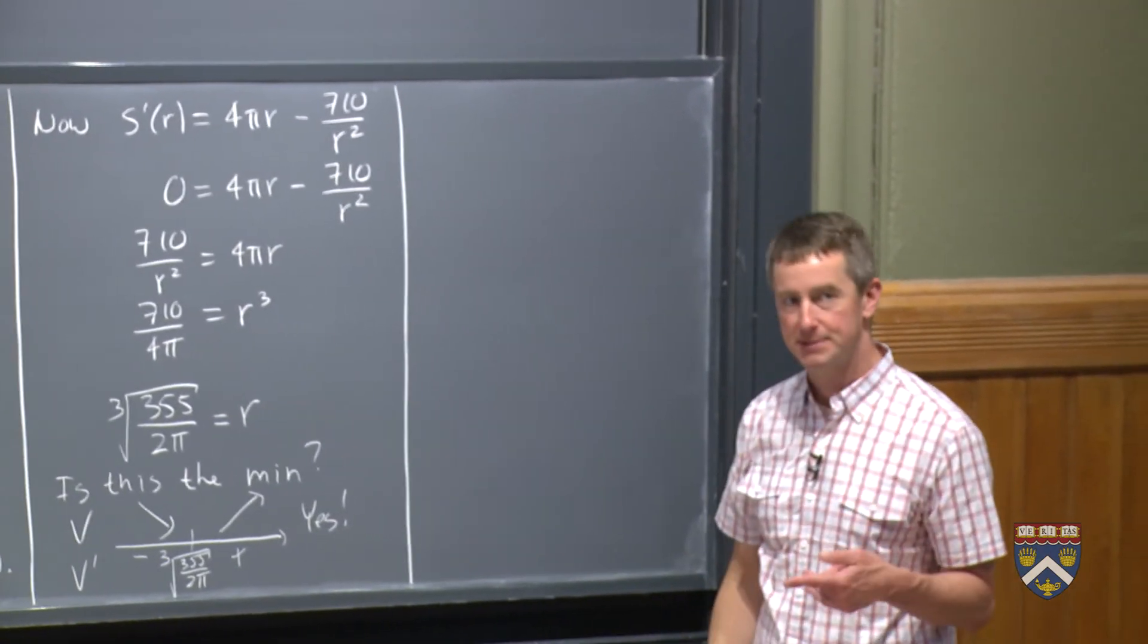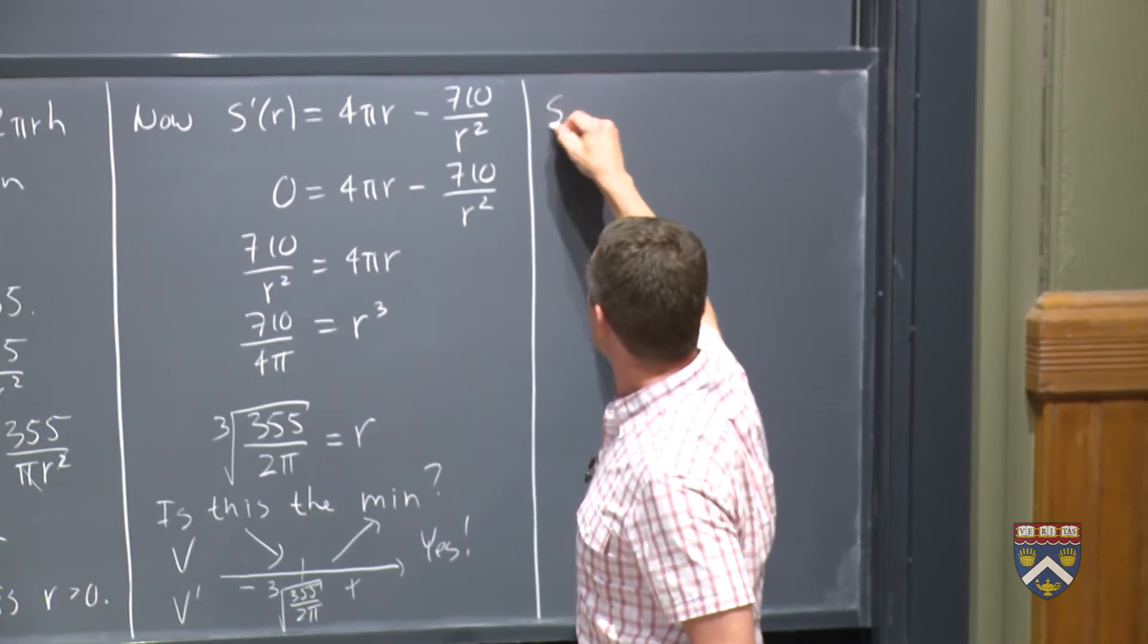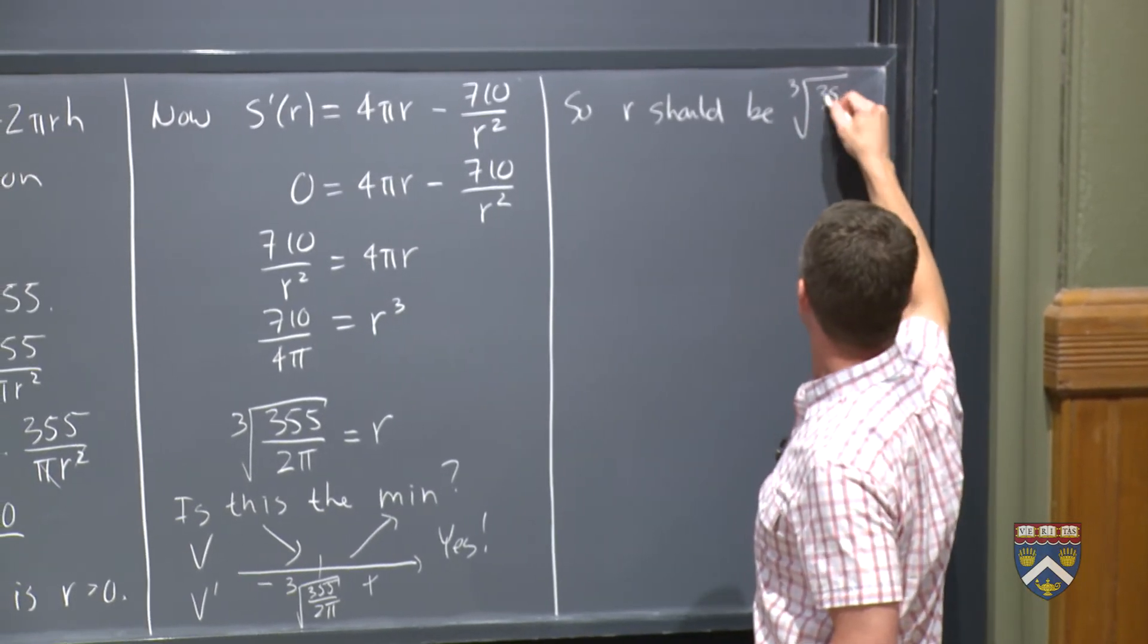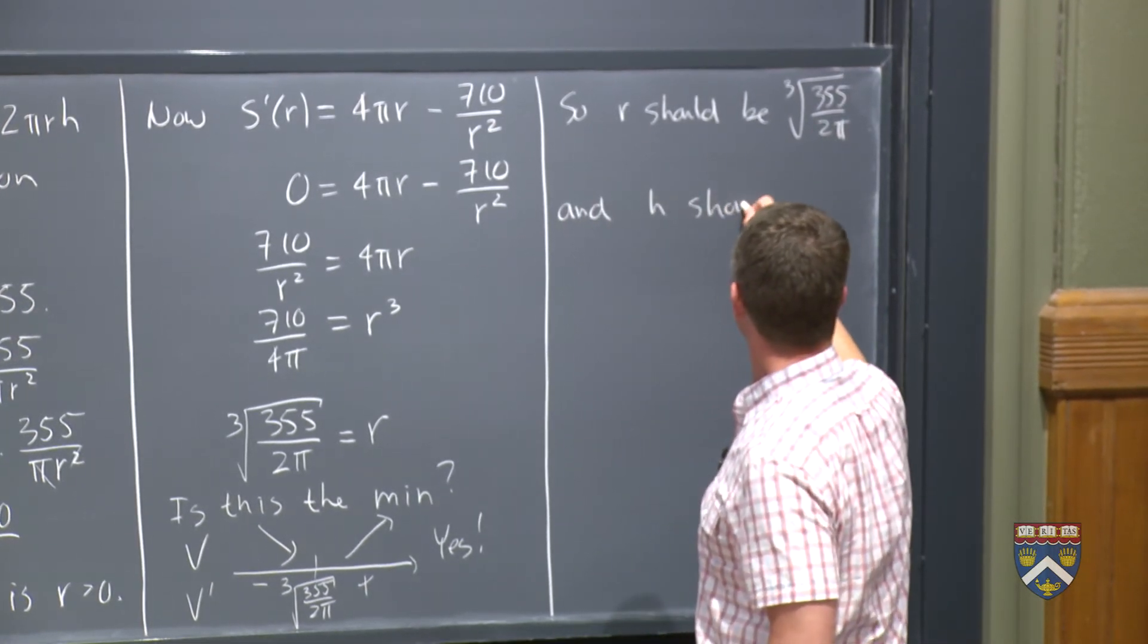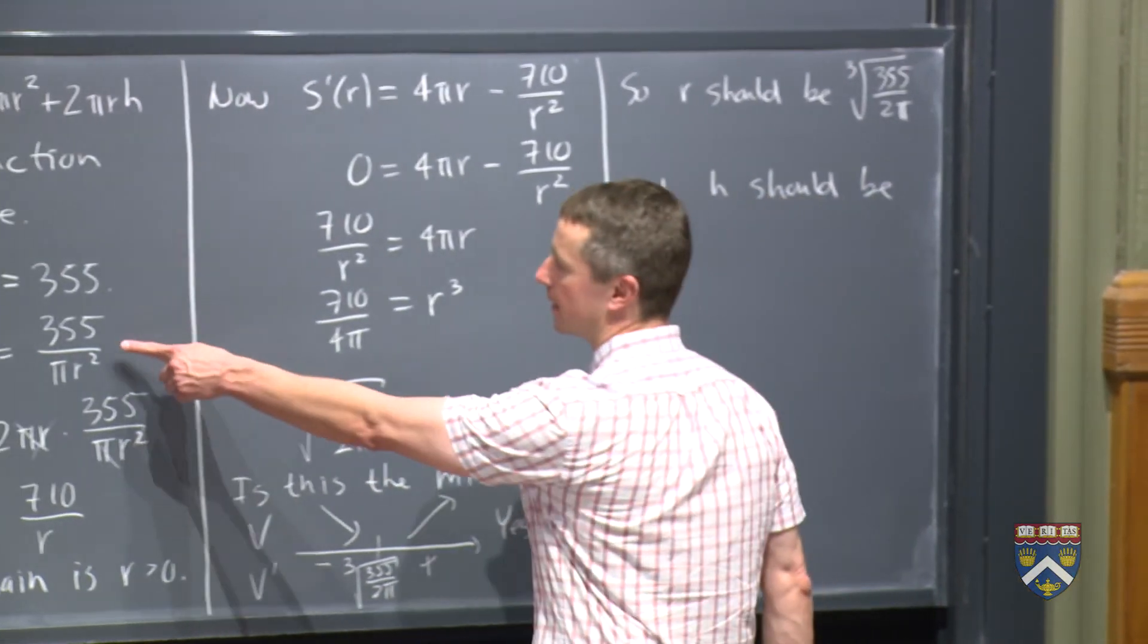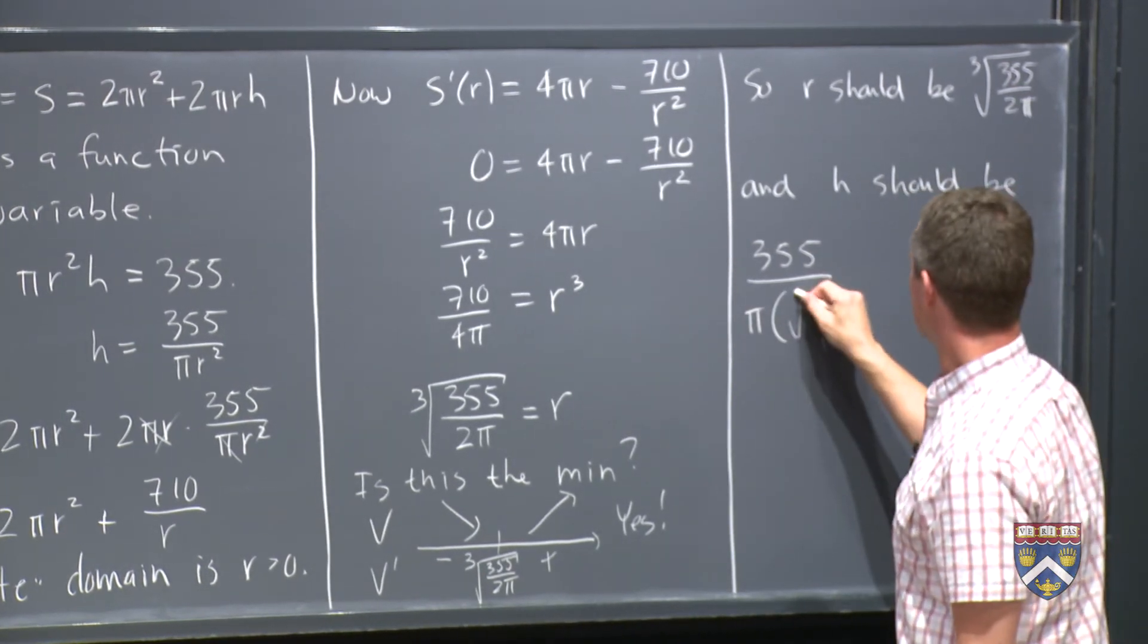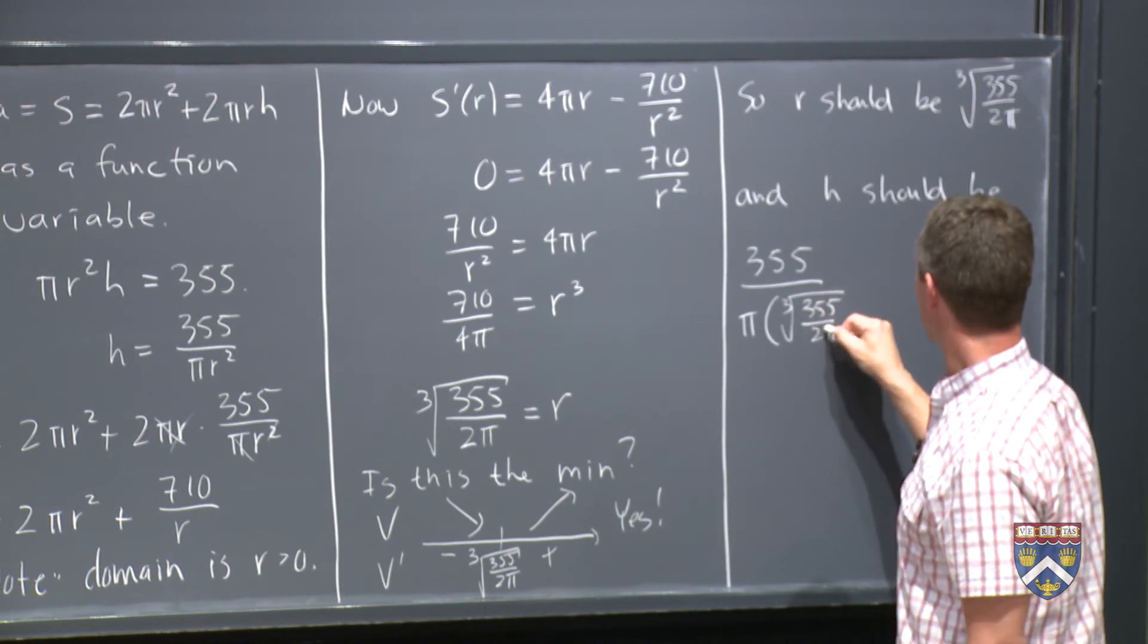So we should let, so r should be what we just found, should be the cube root of 355 over 2 pi, and h should be, well, somewhere on the board, we must have a formula that gives h in terms of r, and here it is, 355 over pi r squared. This is my r, cube root of 355 over 2 pi all squared.